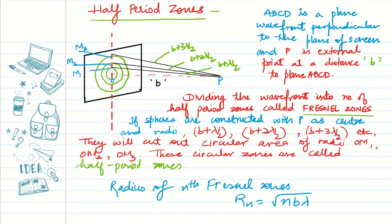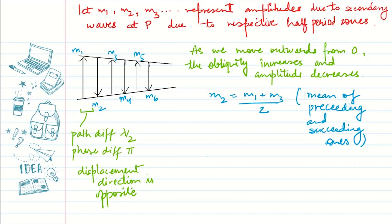Now let's take one more concept related to half period zones. The vibrational amplitudes of the respective half period zones are m1, m2, m3, and so on. Due to the first Fresnel zone we have amplitude m1. As we go to m2, because of the path difference of λ/2 there is a phase difference of π and the displacement is in the opposite direction. Similarly for other amplitudes — as we move outwards from O, the obliquity increases and the amplitude decreases. For any Fresnel zone, the amplitude can be written as the mean of the preceding and succeeding ones.